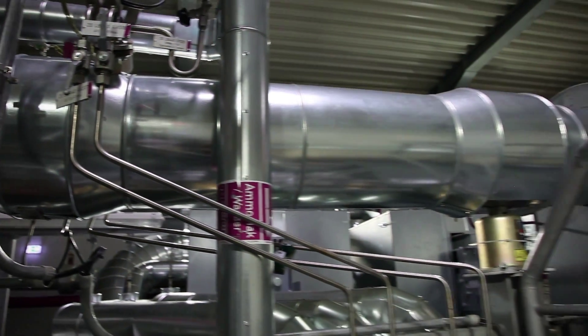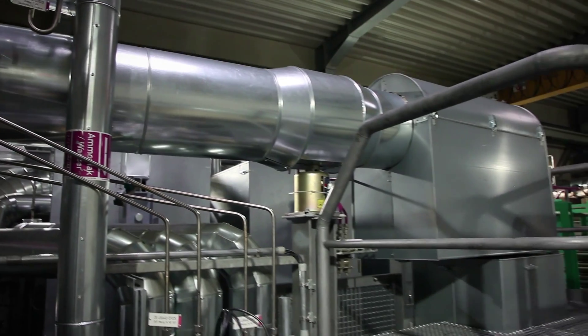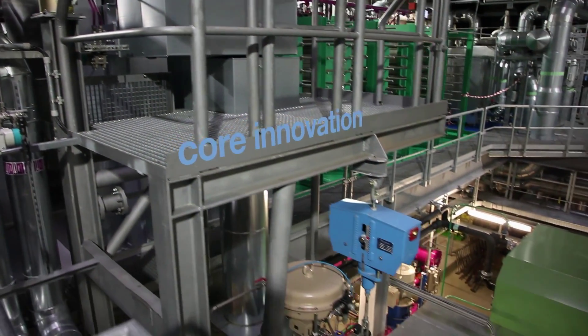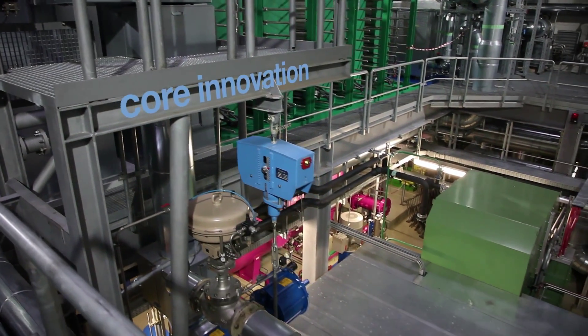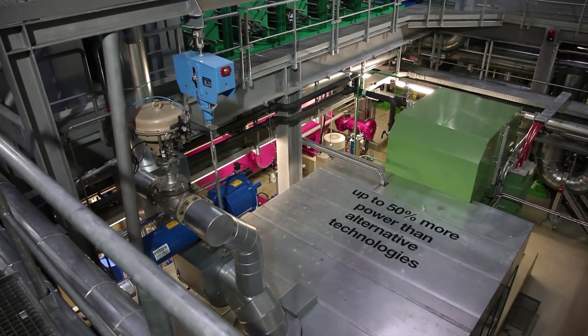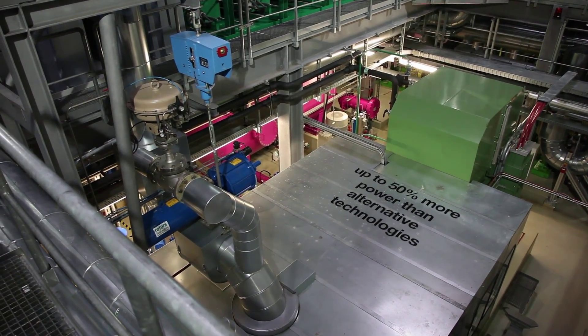Note that the working fluid's mixture of ammonia and water is a core innovation in the Kalina Cycle and is a main part of the reason that Kalina Cycle power systems can generate up to 50% more power than alternative technologies like organic Rankine or steam Rankine.